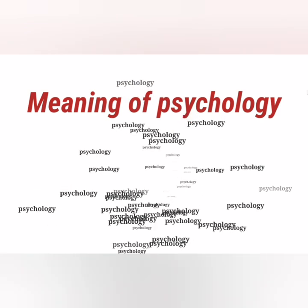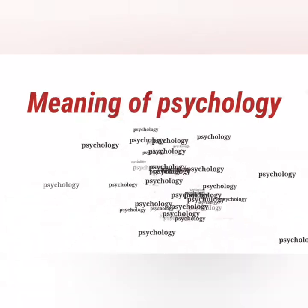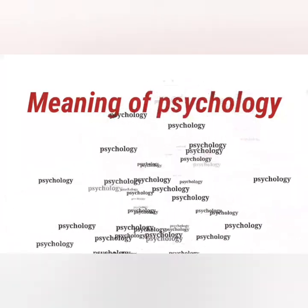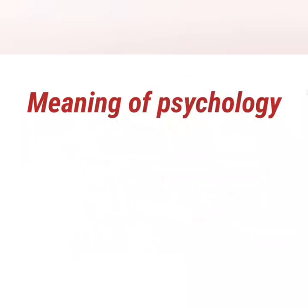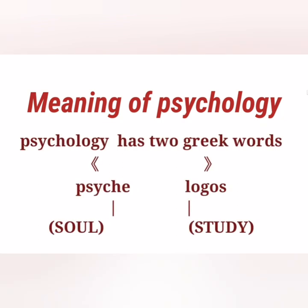Sabse pahle samajna hai ki word 'psychology' kahan se aya — psychology ka actual meaning kya hai. Psychology has been taken from two Greek words: first one is 'Psyche' and second one is 'Logos'. Psyche means soul, and Logos means study.